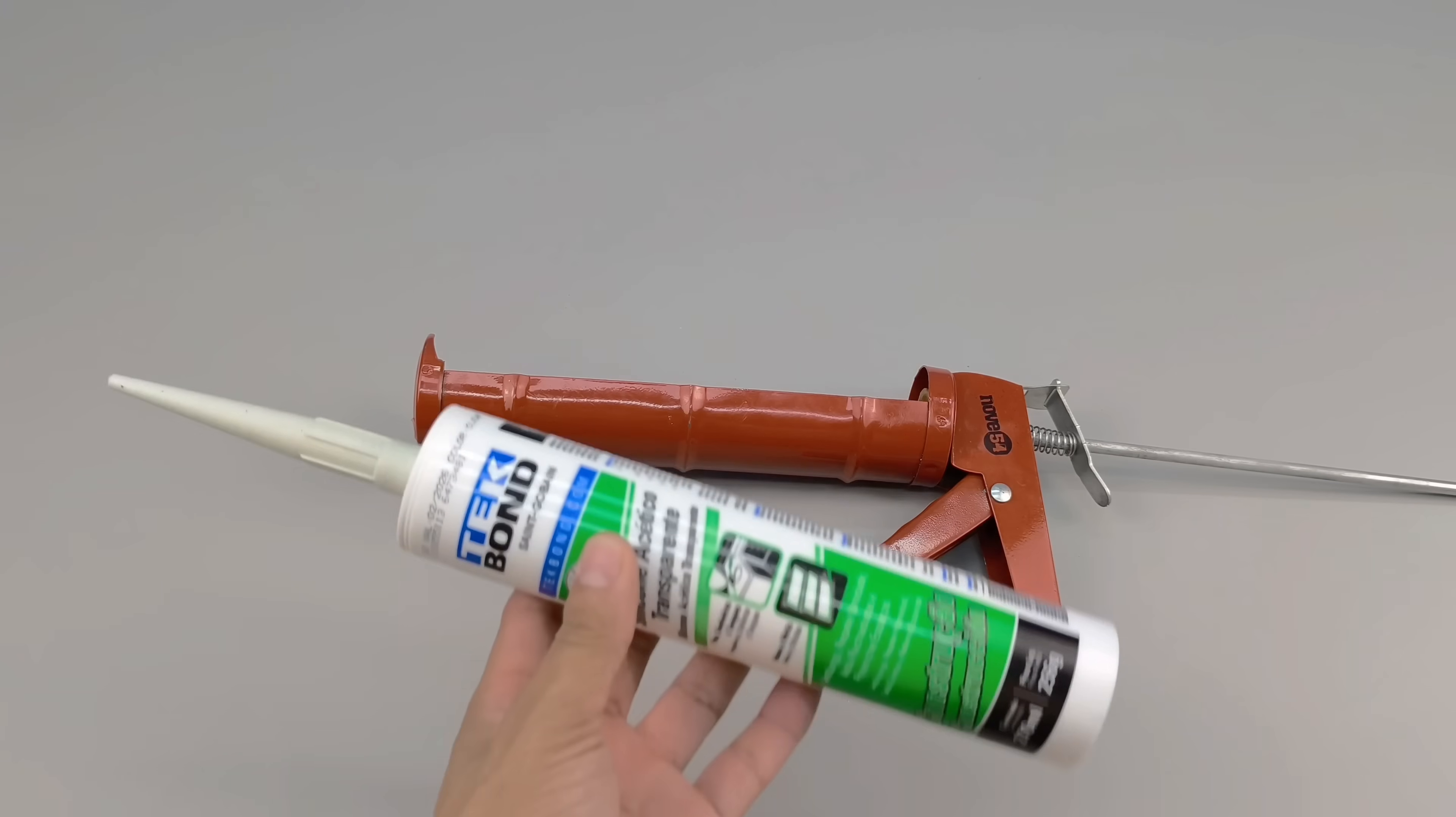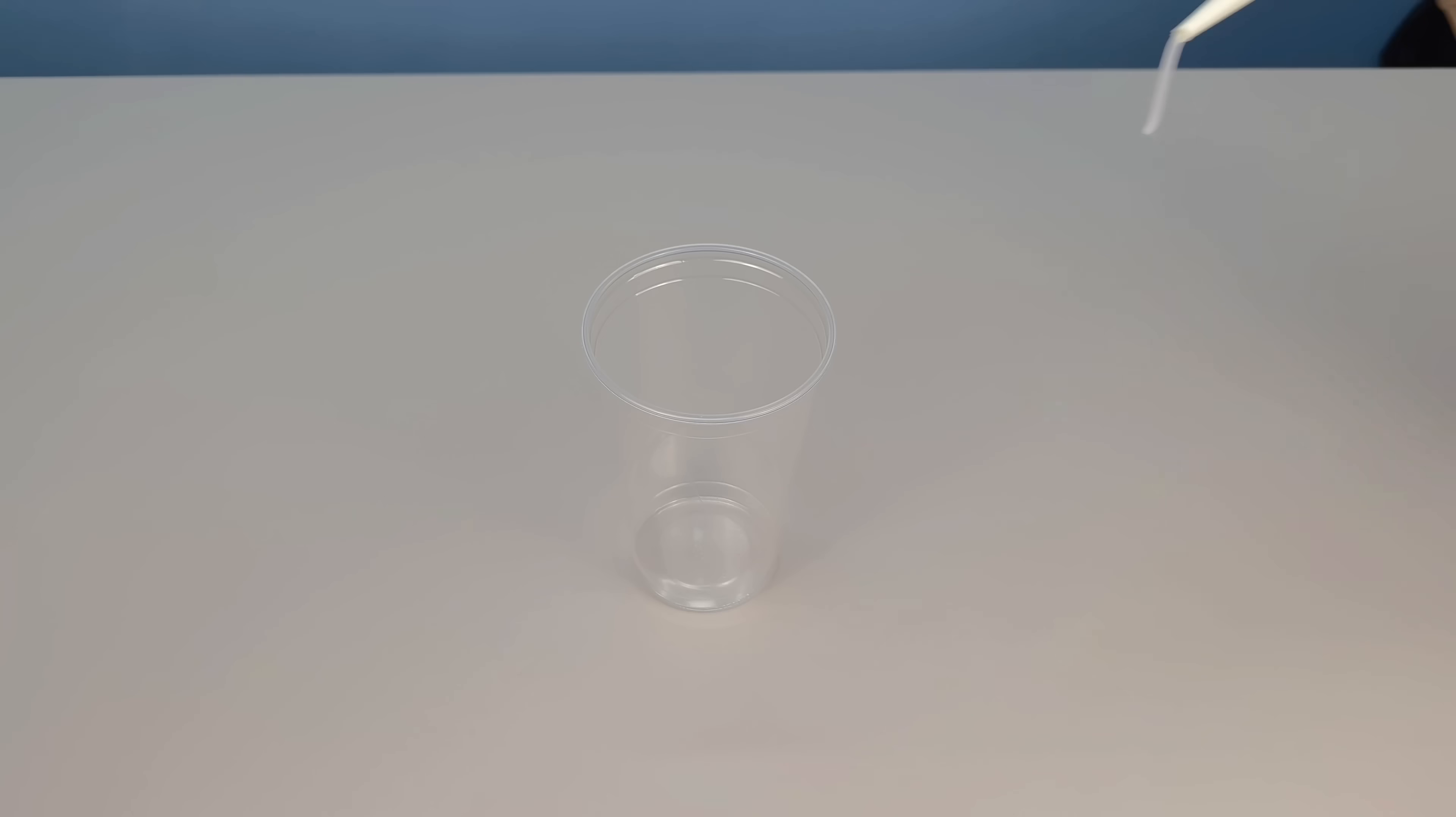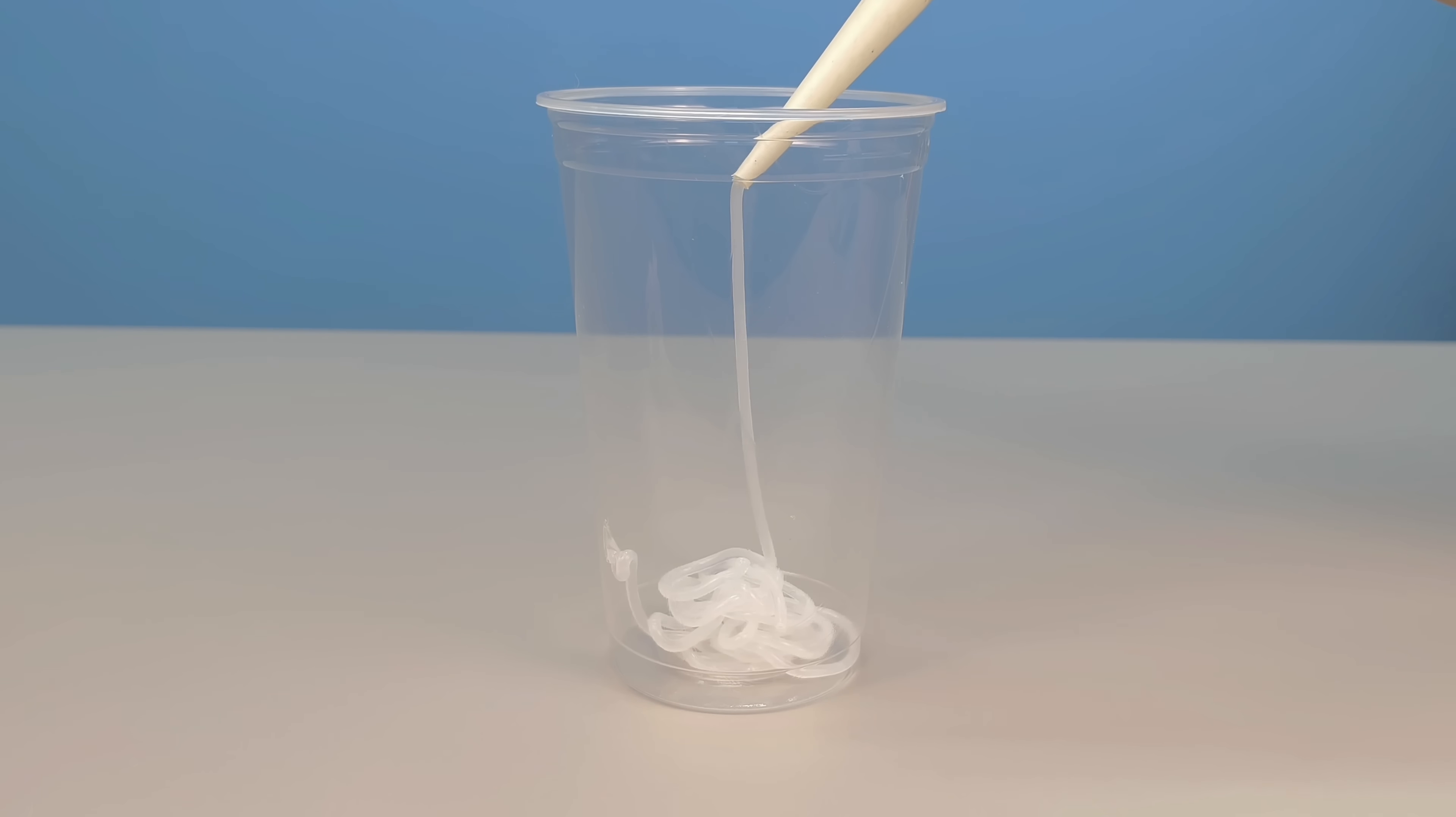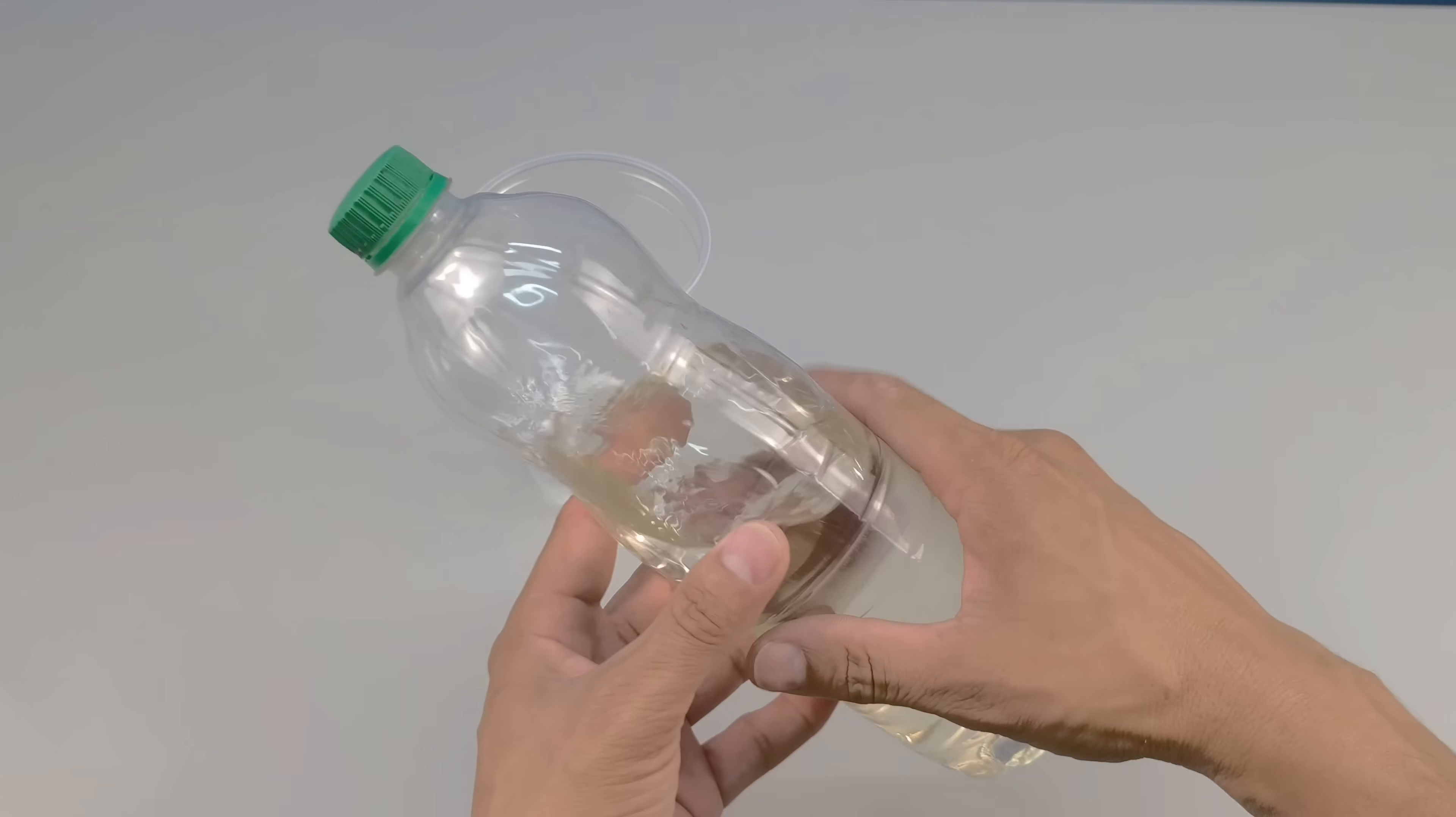Let's start with the main ingredient: silicone. Have a tube of silicone handy, preferably the neutral type, which is more versatile. If possible, also use a manual silicone applicator, the one with a trigger that allows you to precisely control the flow. After that, begin extracting the silicone, directing it into a container. Here I'm using a regular cup, but I highly recommend using a metal container, like an aluminum or brass pot, because it needs to withstand the next ingredient in the mixture: the solvent.